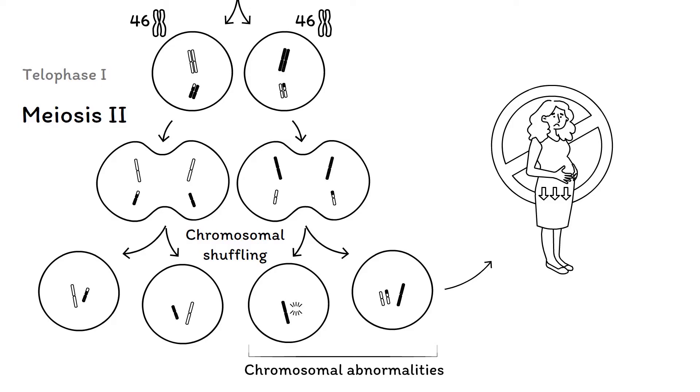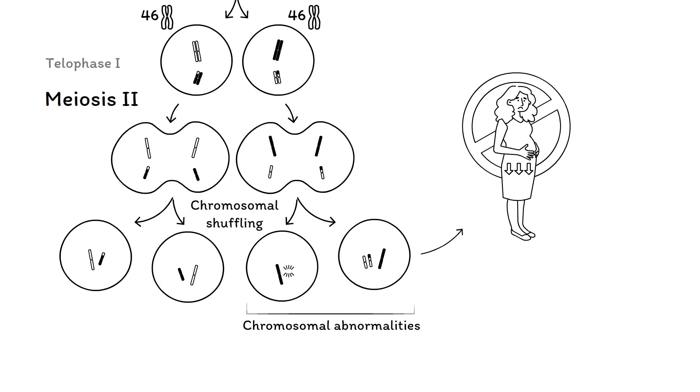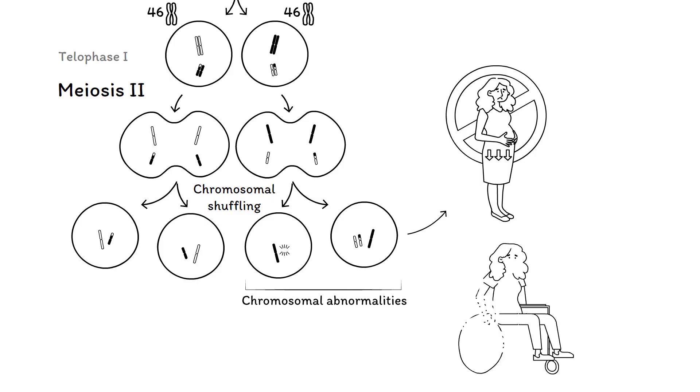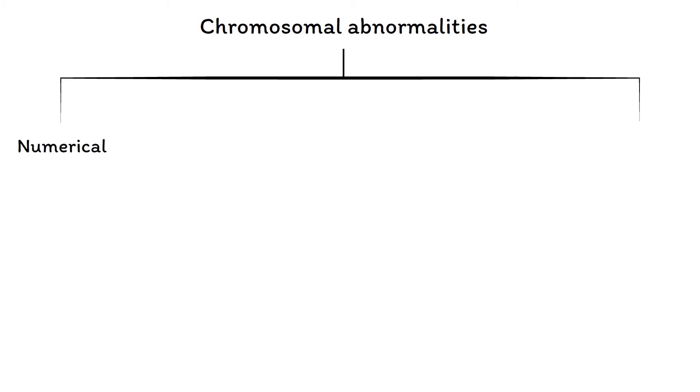Furthermore, chromosomal abnormalities are responsible for a significant fraction of genetic diseases, as they occur in approximately one of every 150 live births. Chromosomal abnormalities can roughly be divided into two types: numerical and structural abnormalities.